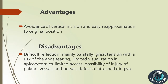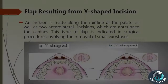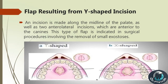The effect of attached gingiva flap resulting from Y-shaped incision: an incision is made along the midline of the palate, as well as two anterolateral incisions which are anterior to the canines. This type of flap is indicated in surgical procedures involving the removal of small exostoses.